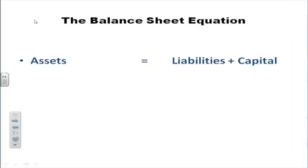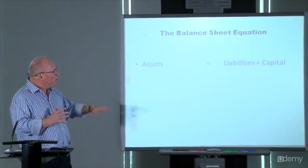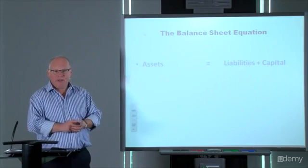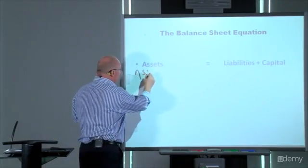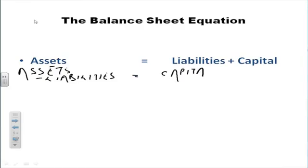Let us start with the balance sheet equation. Our friend Luca Pacioli was a mathematician, and mathematicians like equations — like simple algebra. Our simple algebraic equation says that things either side of the equal sign must always equal, which is the reason we have the double-entry bookkeeping system. So Pacioli, as a result of double-entry bookkeeping, comes up with this equation where assets at all times equal liabilities plus capital. And because it's an algebraic equation, clearly assets minus liabilities will equal capital.